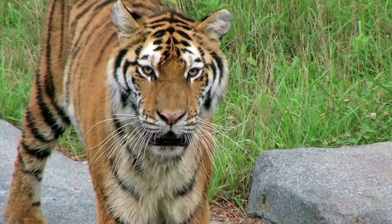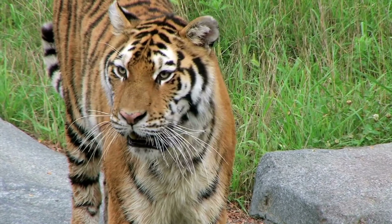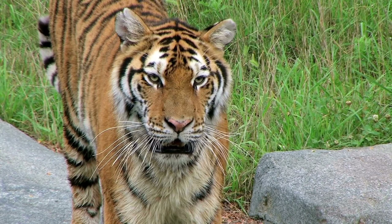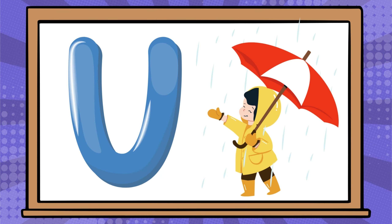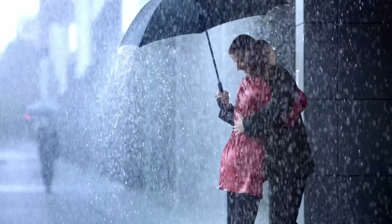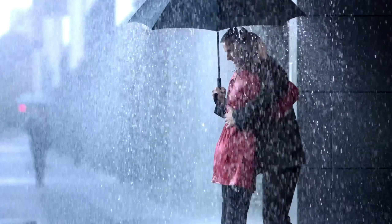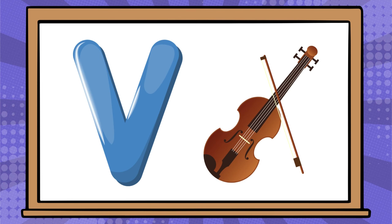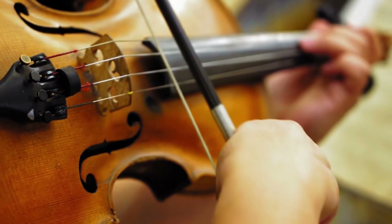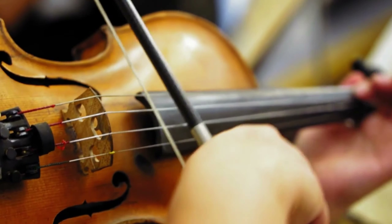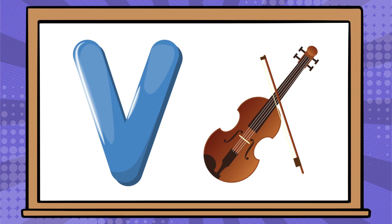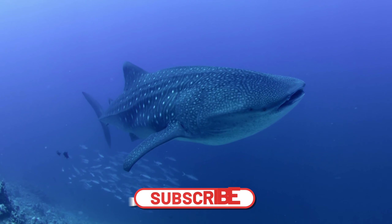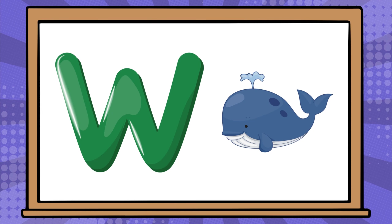U is for umbrella. U, U, umbrella. V is for violin. V, V, violin. W is for whale. W, W, whale.